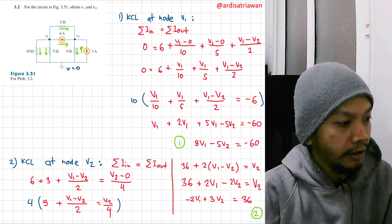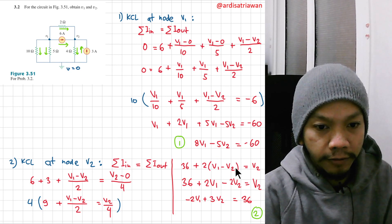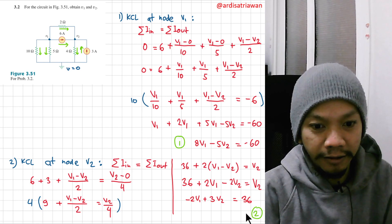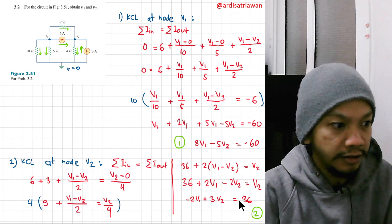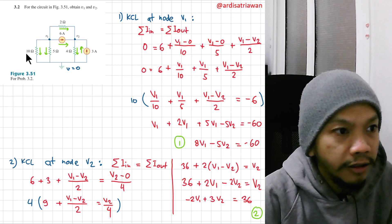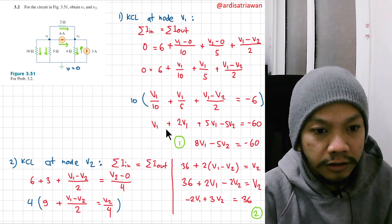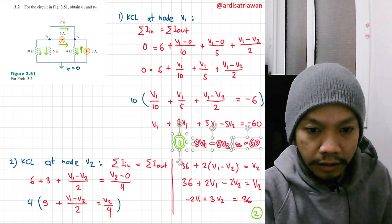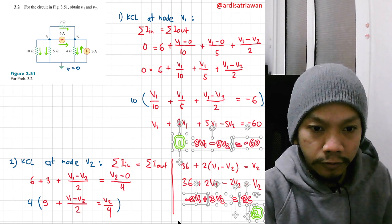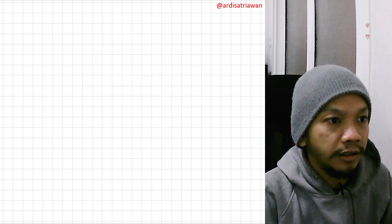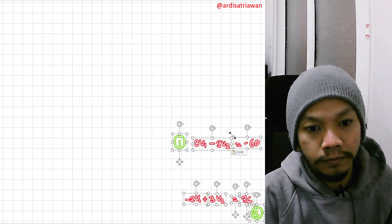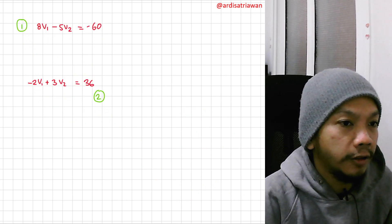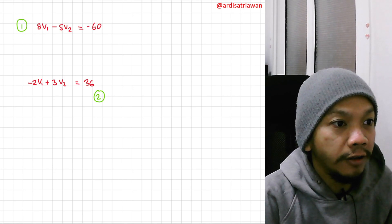Now we have two equations and two variables. We can use substitution or elimination. Let's copy both equations — equation one and equation two — and solve them on the next slide.